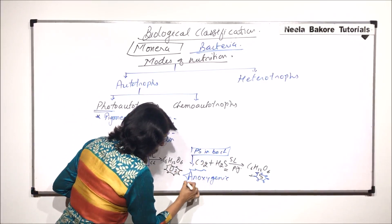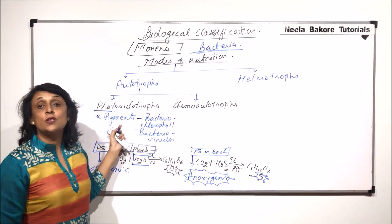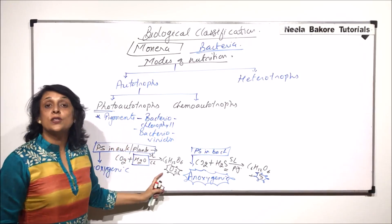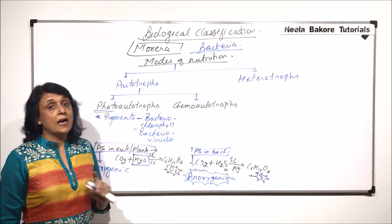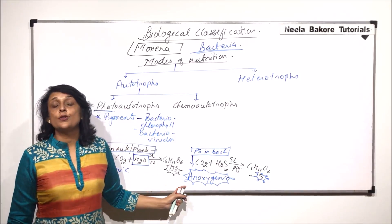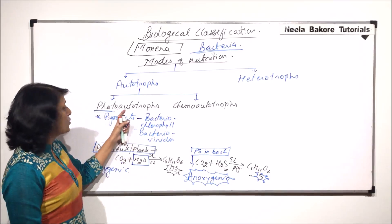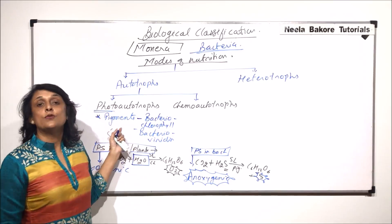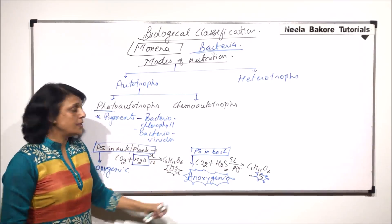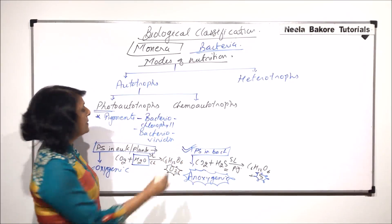In case of prokaryotes, though they are able to use sunlight and they have the pigments, oxygen is not given out as a by-product. That is why this photosynthesis is known as anoxygenic photosynthesis. So if bacteria are using sunlight to make their own food, this is the process which is seen in case of these photoautotrophic bacteria.